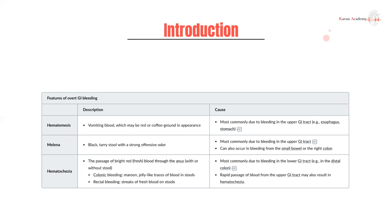Melena is going to be an upper GI bleed, because for it to be black, tarry, and digested, it has to pass through most of the GI tract. If you're bleeding close to the rectum, it's not going to be melena. Then you have hematochezia, which is the passage of bright red or fresh blood through the anus — either with stool or without stool. At this point we worry about lower GI bleeds, particularly bleeds in the distal colon.